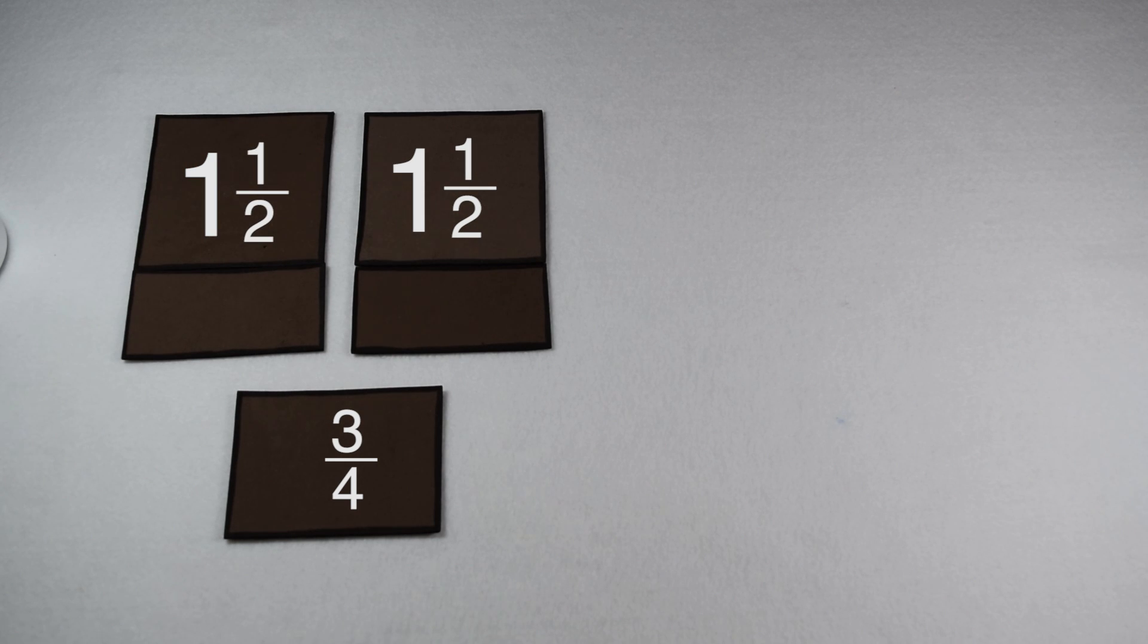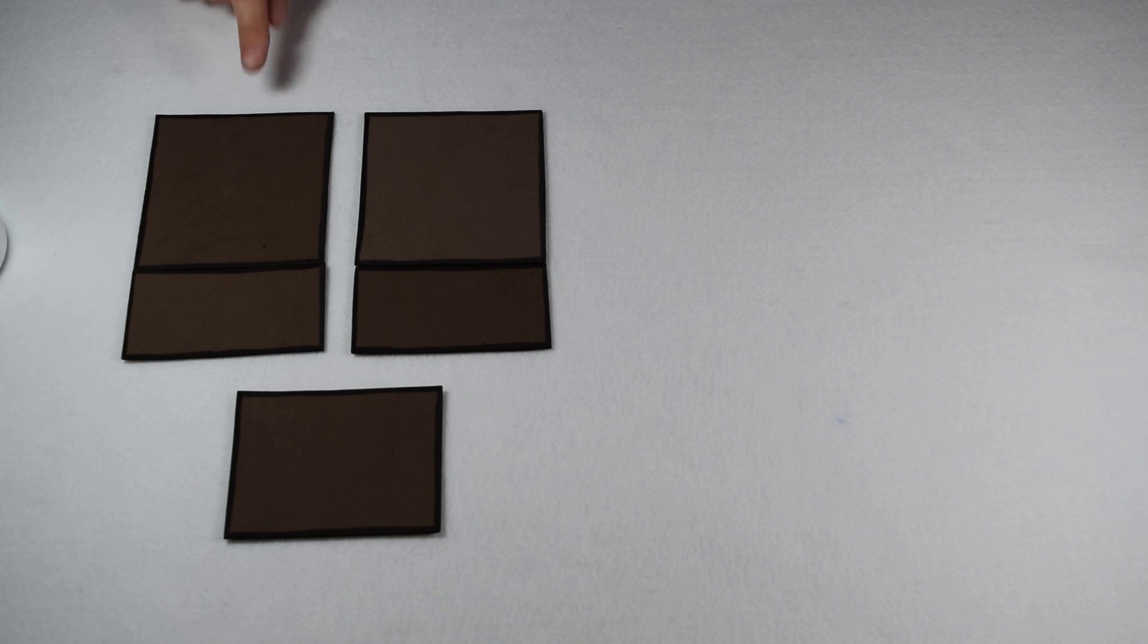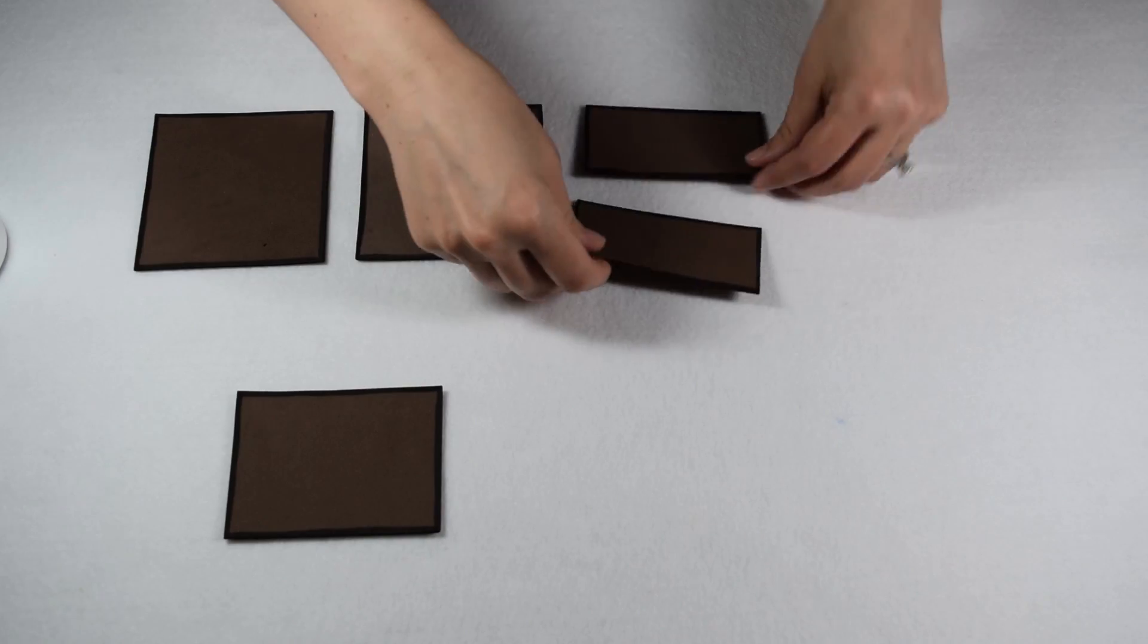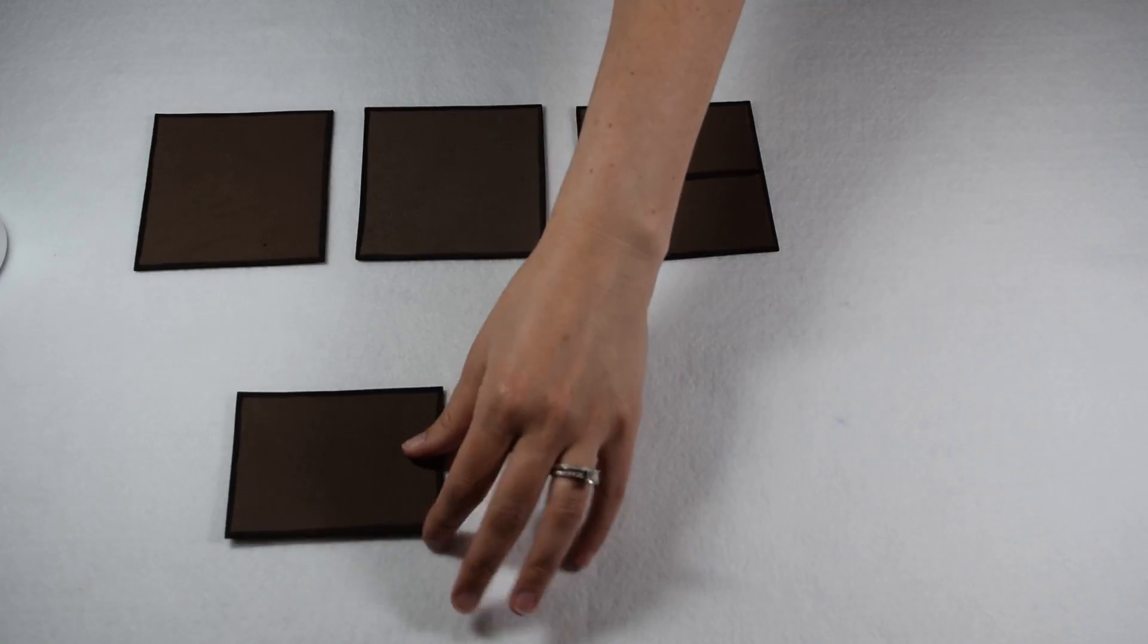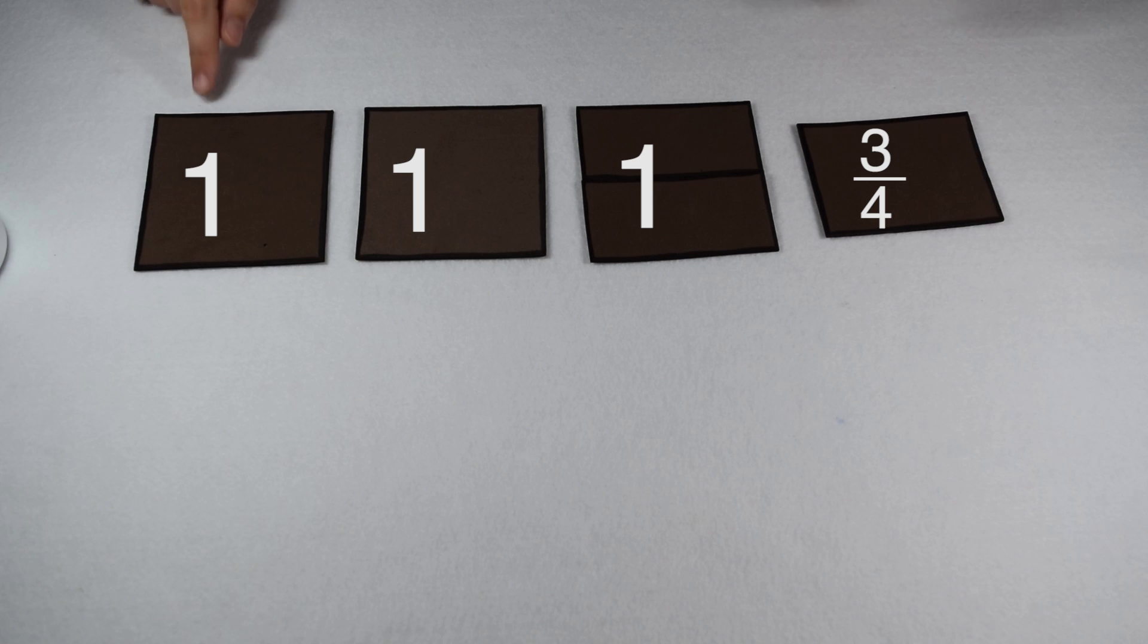Well, we can first start by figuring it out by adding all our pieces together. I have one whole pound here and another pound there. We can put our two halves together to make a third pound, and then our half a chocolate bar is worth three-fourths of a pound. So all together we have three and three-fourths pounds of chocolate.